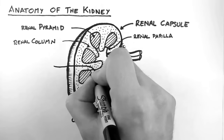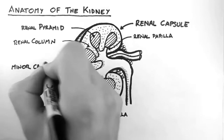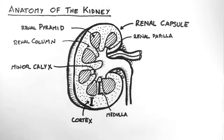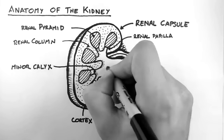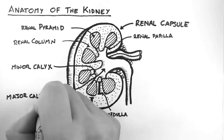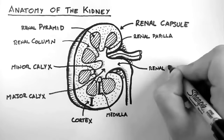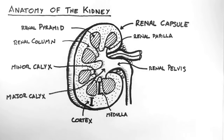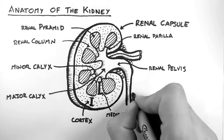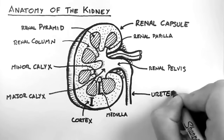This is a minor calyces here. The urine then flows from the minor calyces to the major calyces, which in turn empty into the renal pelvis. The urine in the renal pelvis then flows to the ureter, which then flows to the bladder.